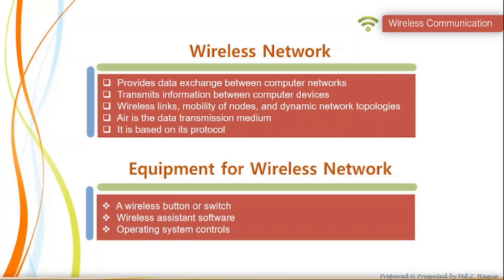Wireless networks provide data exchange between computer networks when the use of traditional cable technologies is difficult or impractical. Wireless networks transmit information between computer devices; this information can be in any form like email, video, or voice messages. Wireless networks are characterized by wireless links, mobility of nodes, and dynamic network topologies. Any wireless network is based on its protocol. Wireless devices can be controlled in three ways: a wireless button or switch, wireless assistance software, and operating system control.